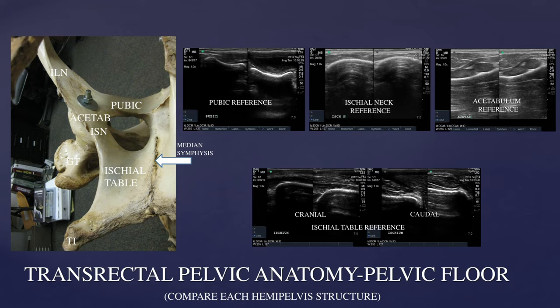Slide one demonstrates the normal transrectal pelvic floor anatomy. The anatomical specimen is on the left-hand side of this slide and shows the appearance of the ischial table and of the median symphysis — demonstrating only a hemipelvis, one half, the left-hand side. The bottom ultrasound images show both the cranial and caudal aspects of the right and left ischial table. These are normal reference images showing the curve of bone as they go over the brim of that structure, both cranially and caudally.